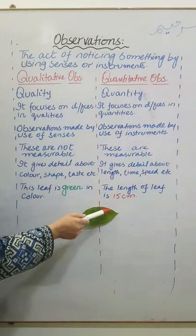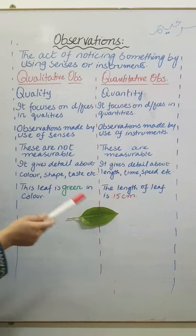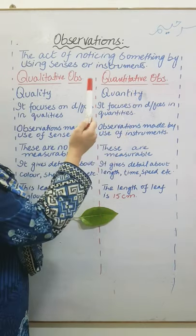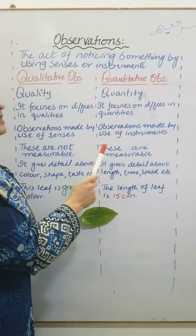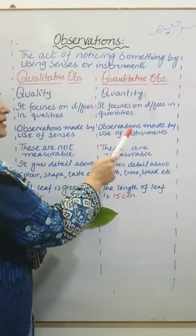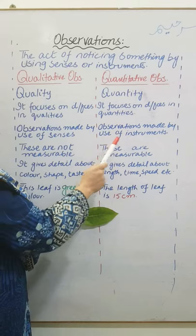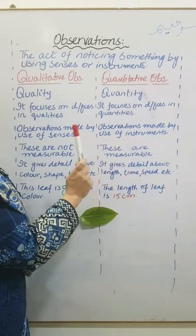The color of the leaf is green. But if we talk about quantitative observation, these tell us about the quantity. These focus on differences in numbers. Observations are made by use of instruments. These are measurable.